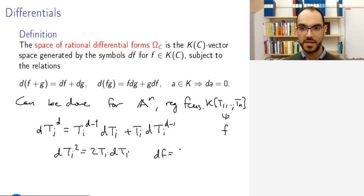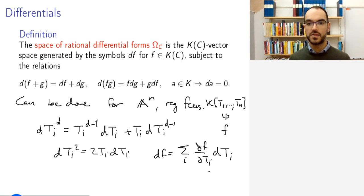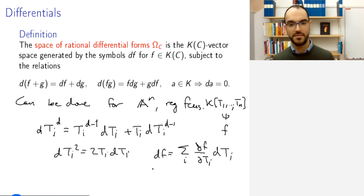And in general, df will be, as perhaps expected, the sum over all i of ∂f/∂t_i dt_i. So, this is indeed related to the tangent spaces, or rather the cotangent spaces, that we have calculated.